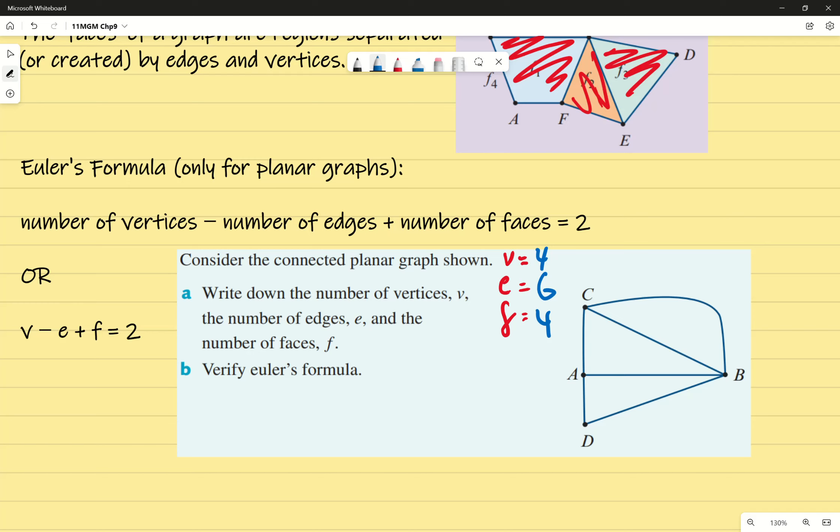We've written the number of vertices, edges, and faces. To verify Euler's formula, substitute that back in. V is 4 minus E which is 6 plus F which is 4 should equal 2. Is that true? Yeah, it's true.